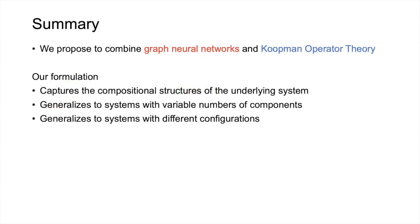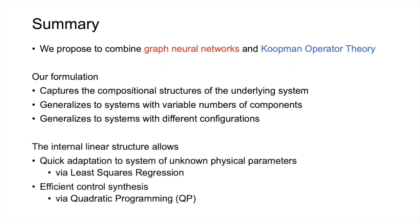In summary, we propose to combine graph neural networks and Koopman operator theory. Our formulation captures the compositional structures of the underlying system. It generalizes to systems with variable numbers of components and systems with different configurations. Its internal linear structure allows it to quickly adapt to systems of unknown physical parameters and enable efficient control synthesis.